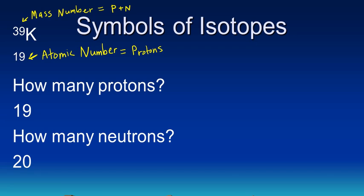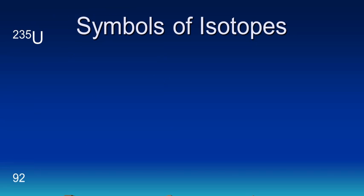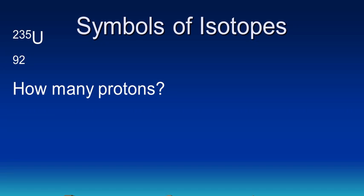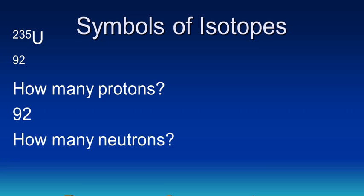Let's try another example. We have a particularly radioactive isotope, uranium. The mass number is 235, and the atomic number is 92. The way that we would read this isotope, or the name of this isotope, would be uranium-235. How many protons are in uranium-235? It's equal to the atomic number, which is 92. How many neutrons? We subtract the top number minus the bottom number, 235 minus 92, so that's equal to 143.